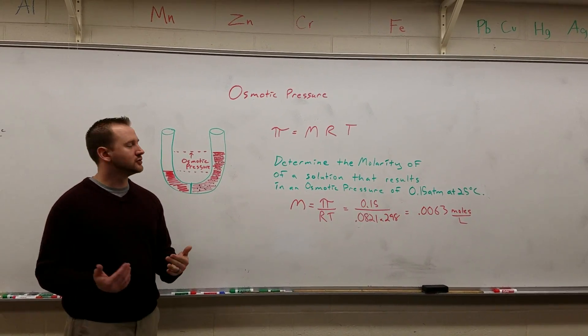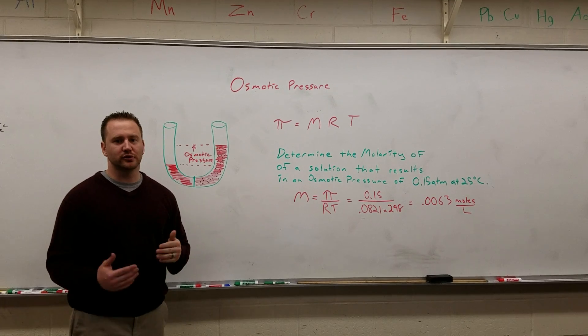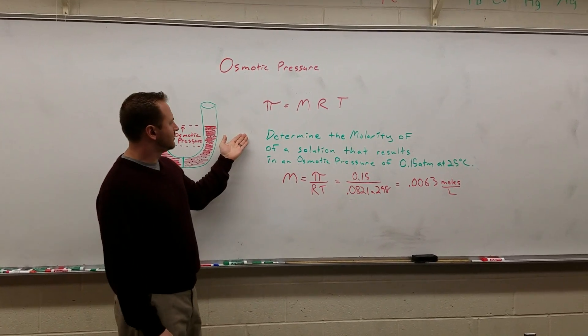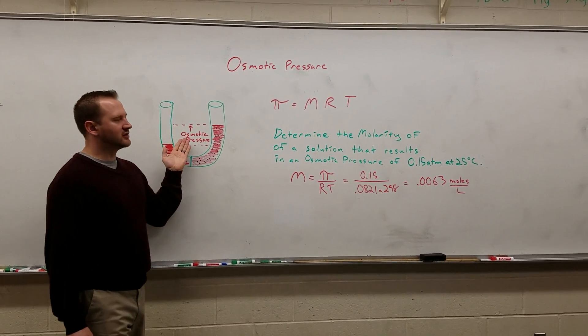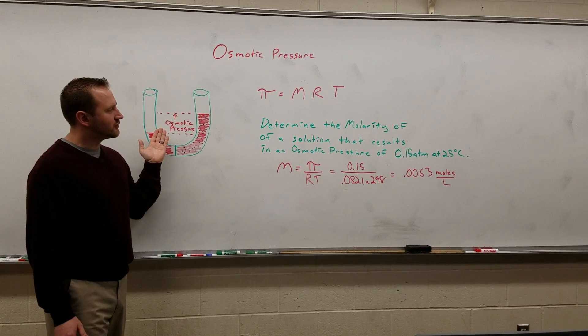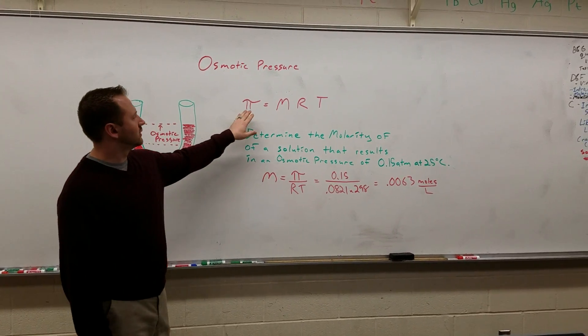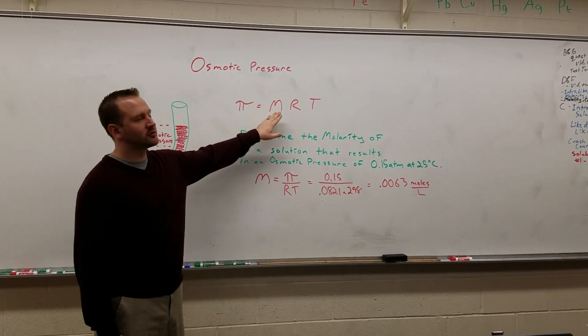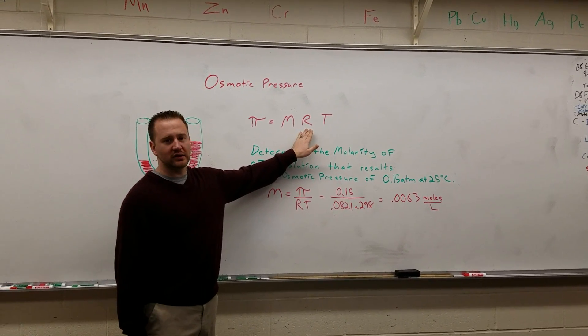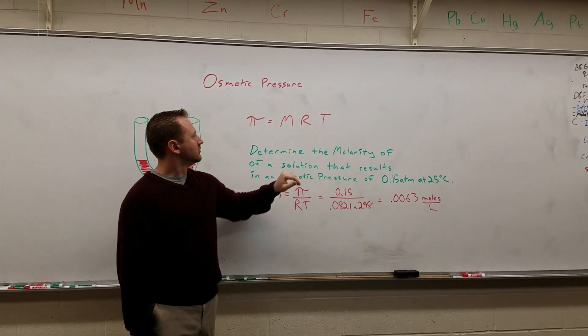So, if I asked you to determine the molarity of this, if we said the osmotic pressure here was 0.15 atmospheres at 25 degrees Celsius, if you use this equation, the osmotic pressure is equal to the molar concentration times the ideal gas constant times the temperature.